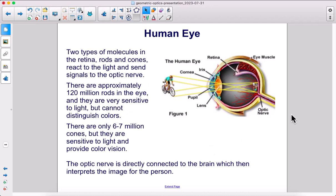Two types of molecules in the retina, rods and cones, react to the light and send signals to the optic nerve. There are approximately 120 million rods in the eye, and they are very sensitive to light, but cannot distinguish colors. There are only 6 to 7 million cones, but they are sensitive to light and provide color vision. The optic nerve is directly connected to the brain, which then interprets the image for the person.